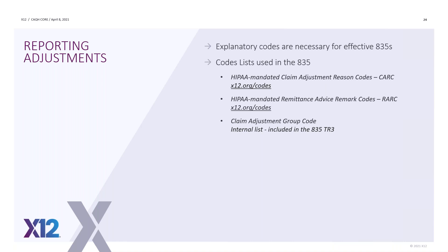The third list that makes up adjustments in the CAS segment is the group codes. Today they are an internal list in the TR-3. So if you need to look at them, you would have to look in the TR-3 to see those five group codes. I will note that in the next version of the TR-3s, the group code has been moved to an external list, giving us greater flexibility in being able to update the group codes to meet more industry need.